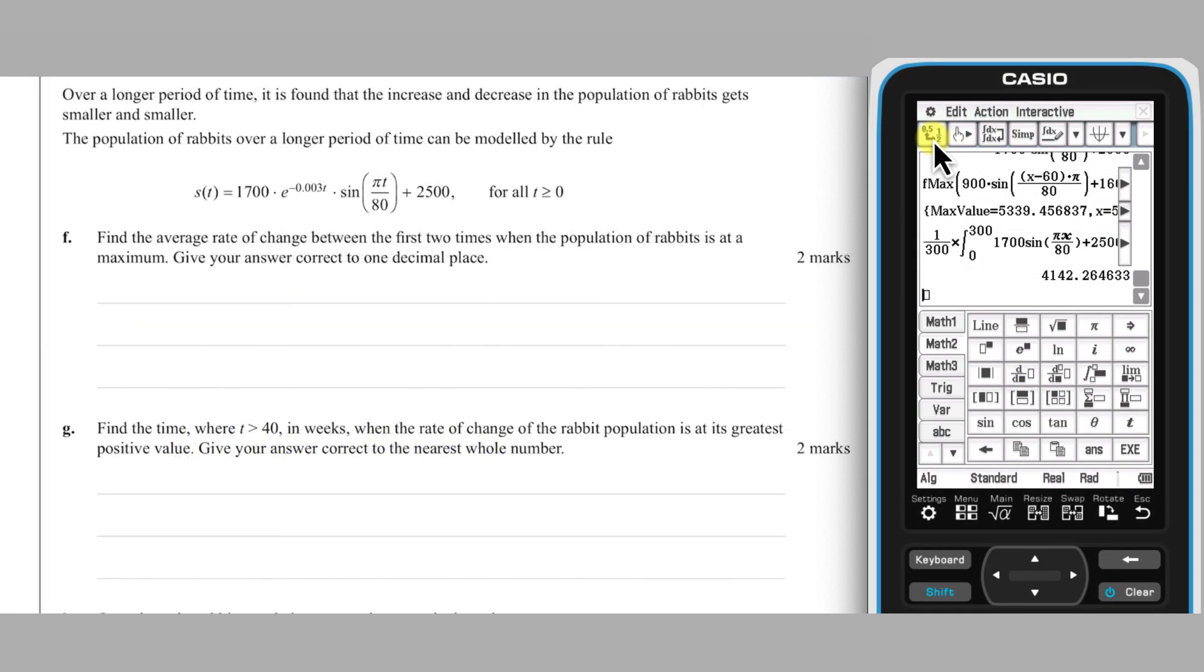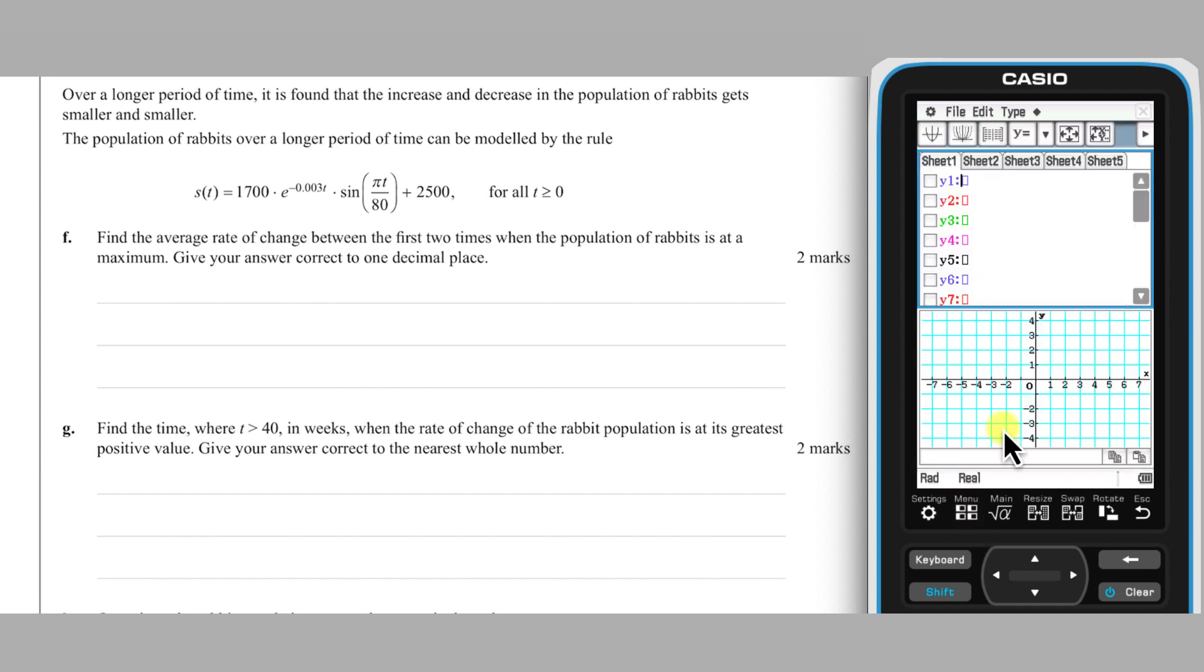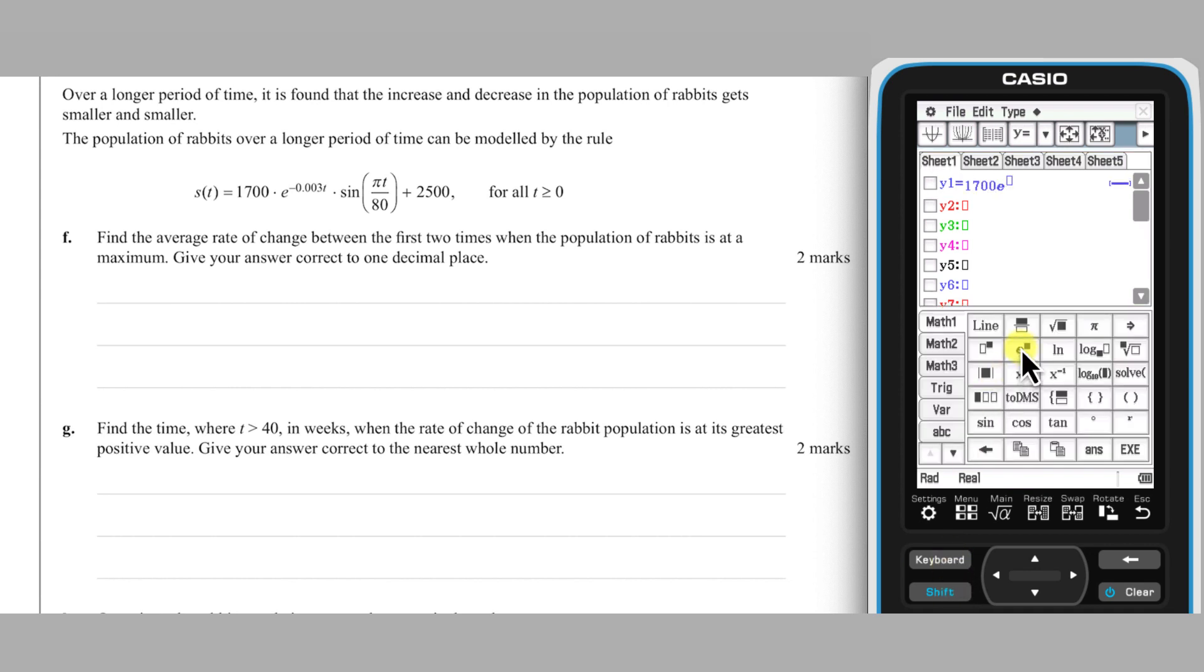We are now presented with the new model for the rabbit population with a decaying amplitude. Our first calculation with this new model is the average rate of change between its first two local maxima. I'm going to locate these using a graph of the model in ClassPad's Graph and Table app. Enter the function and then set the view window used at the start of the question.